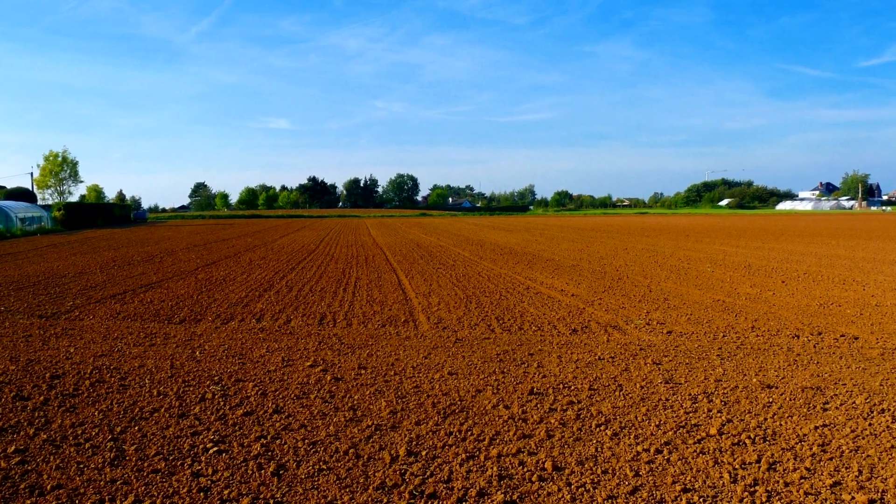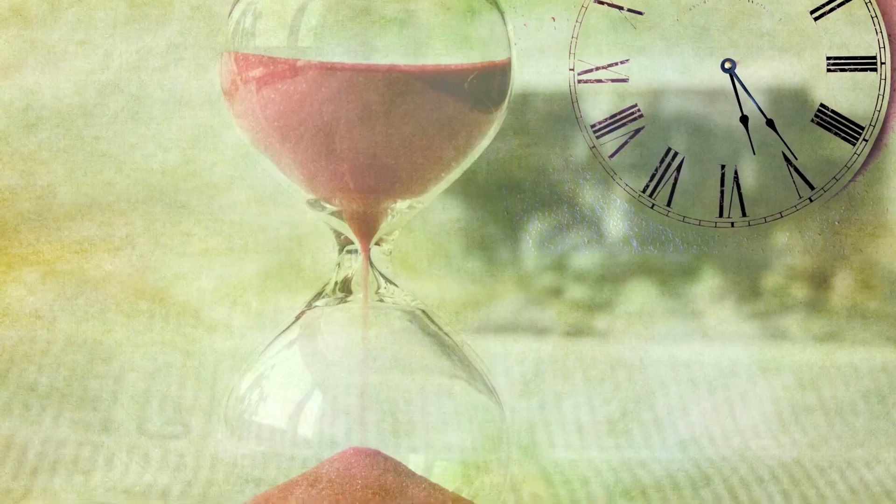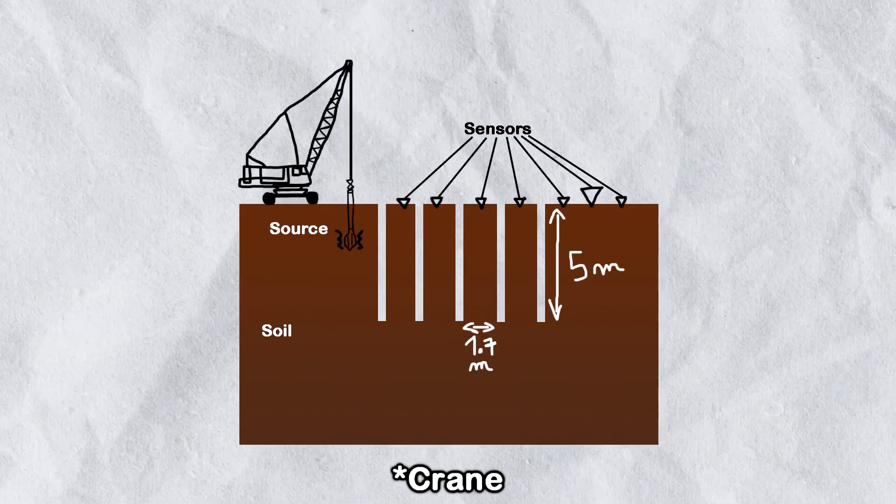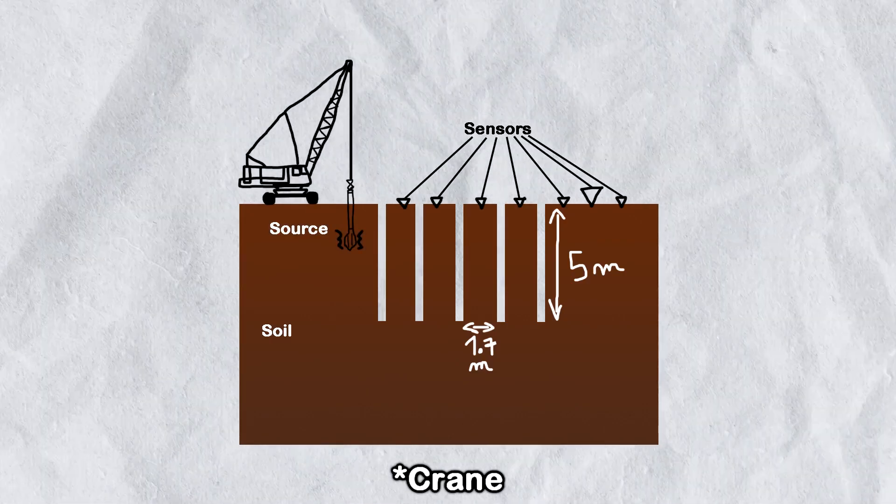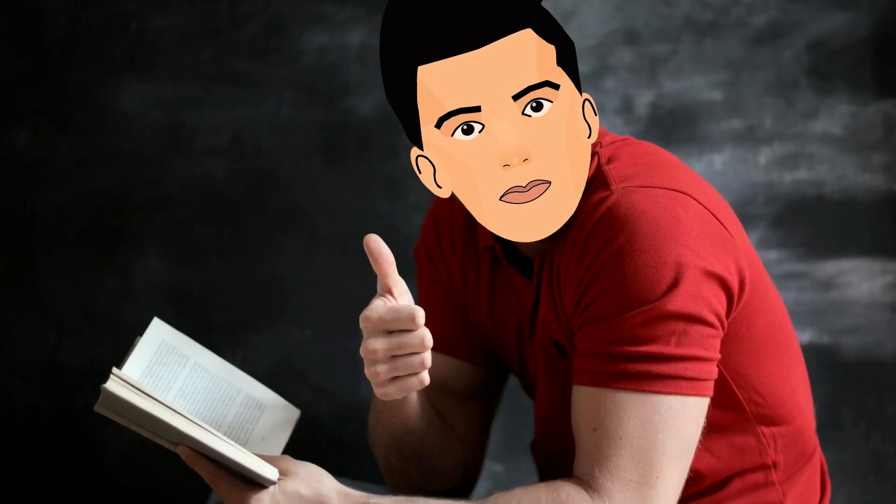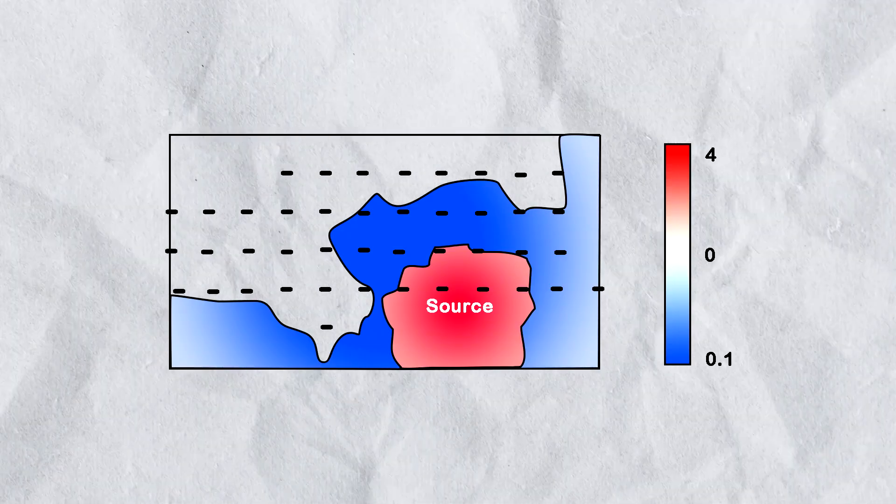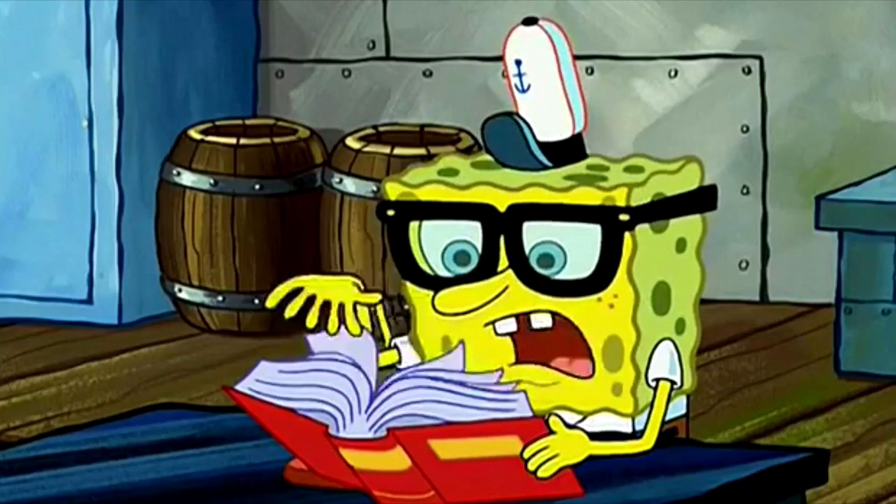They took a big empty field and dug 30 holes 5 meters deep, and then instead of waiting for a quake that may never come, they used a big truck that shook the ground 50 times per second. The result was actually pretty impressive. It turned out that the holes cornered the waves and prevented them from spreading further, but don't let these results fool you.